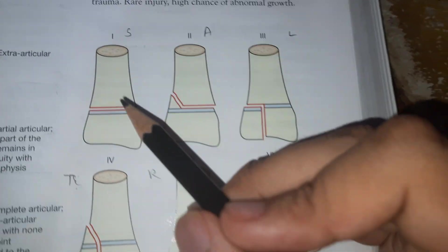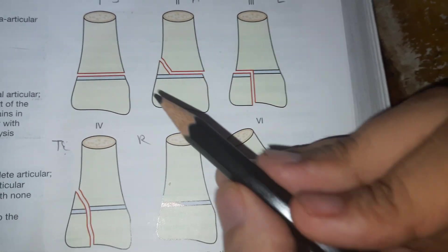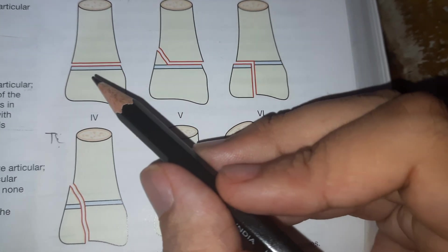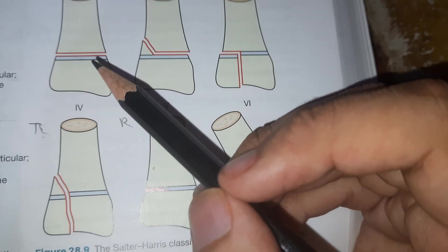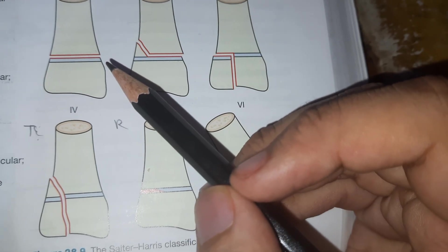For Type 1, in the first Salter-Harris classification, there is a simple fracture line just involving the physis. The fracture line experiences the growth plate.